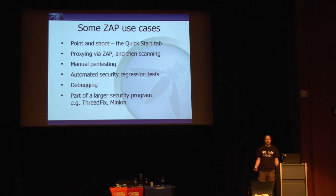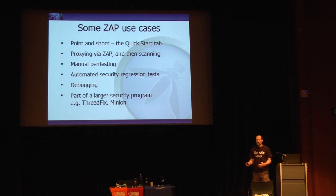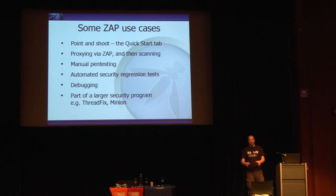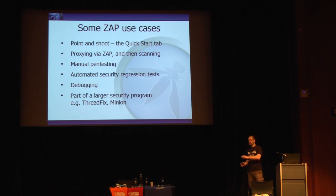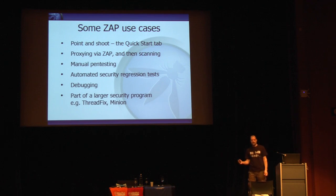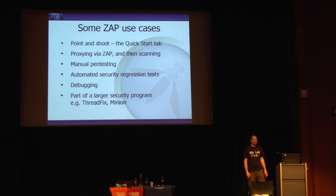For manual pen testing, ZAP is just a starting point — after that there are loads of manual tools. For professional pen testing you want to automate as much as possible so you can concentrate your brain power on things automated scanners can't find. Automated security regression tests are also very important: use your regression tests to explore the application, include this in continuous integration, and within minutes or hours of a code commit you can get an alert — for example, there's now a cross-site scripting vulnerability because someone forgot to escape a variable.